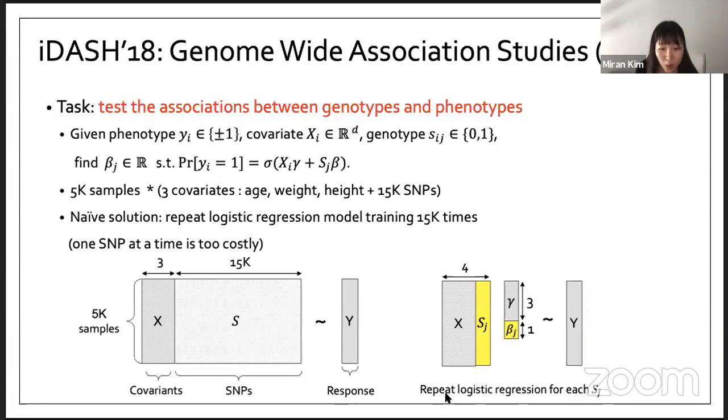The naive method is to repeat the logistic regression model training for each individual SNP, and the number of SNPs is 15K. But one SNP at a time is too costly. Maybe we can estimate it. In 2017 it takes around 10 minutes to build one logistic regression model of dimension 16, so maybe it takes around two and a half minutes to build one model of dimension 4. We repeat 15K times, and maybe it takes more than 20 days. So it's infeasible.